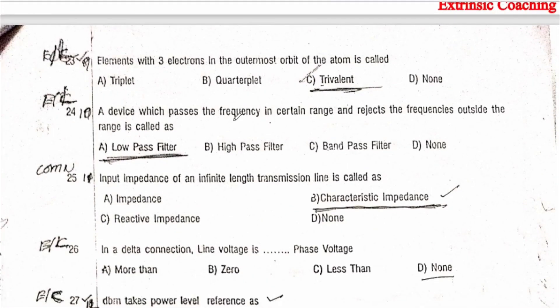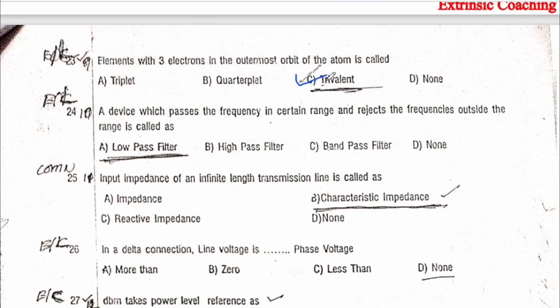An element with three electrons in the outermost orbit is called trivalent. Which trivalent impurities are there? If you know, answer in the comment section — this is a repeatedly asked question. Trivalent impurities have three valence electrons (three electrons in the outermost orbit).